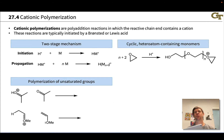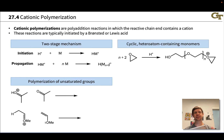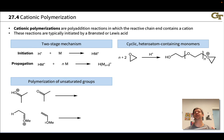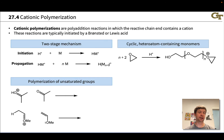Thinking about the various ways polymerizations can proceed mechanistically, particularly polyaddition polymerizations, we can recognize three different possibilities. The reactive chain end in chain growth or polyaddition polymerization could involve a cation, anion, or radical, giving three general classes: cationic, anionic, and radical polymerization. We're going to look at a general mechanism for each and how to recognize when each type occurs.